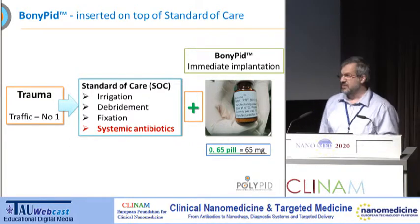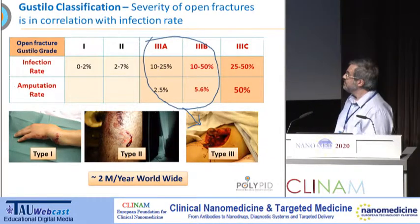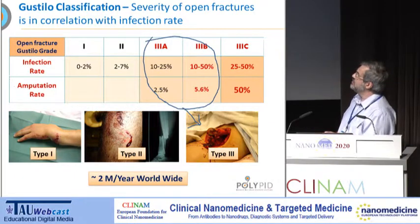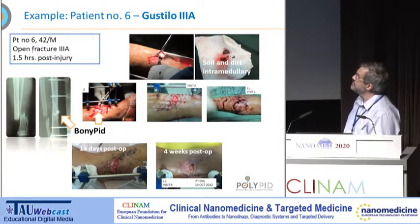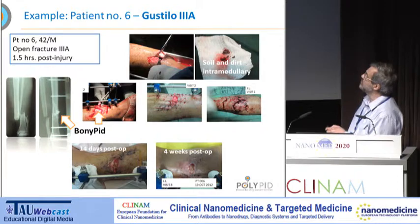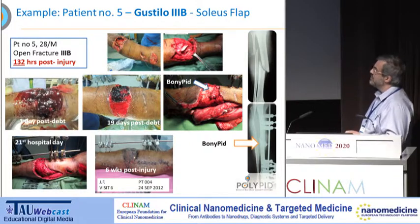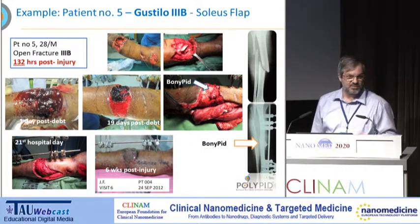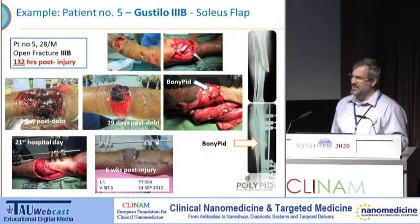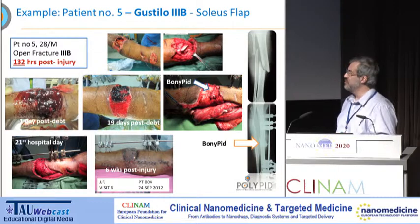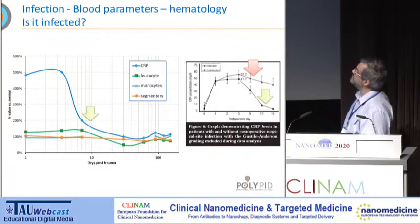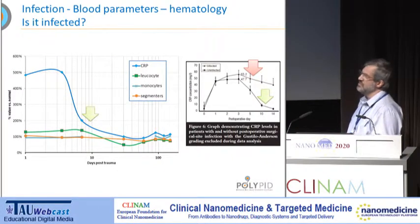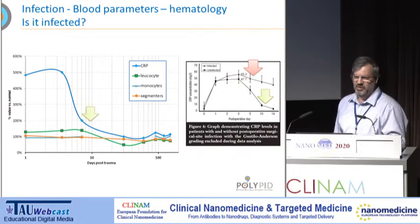16 patients were treated in a first-in-man study — single arm, open label. We selected only very severe patients: Gustilo 3A and 3B. You can see one patient with a lot of dirt coming out of the wound. Another patient came to hospital about six days after injury — not only contaminated but basically infected, with biofilm probably already present. Very severe cases.